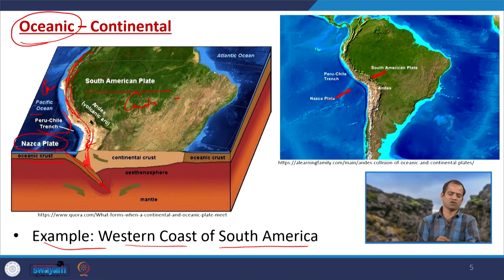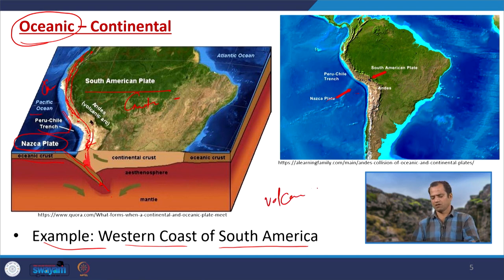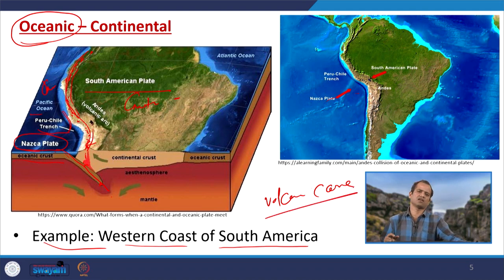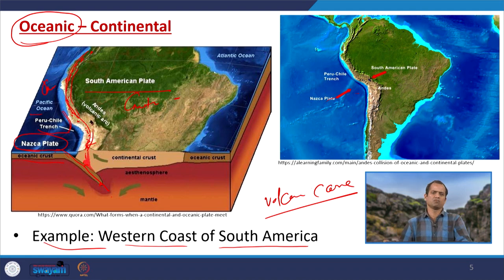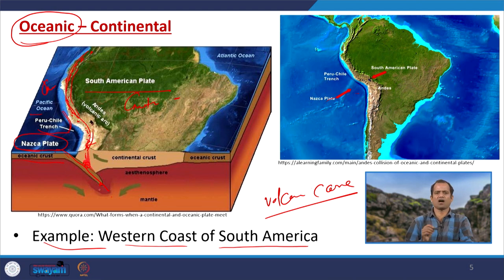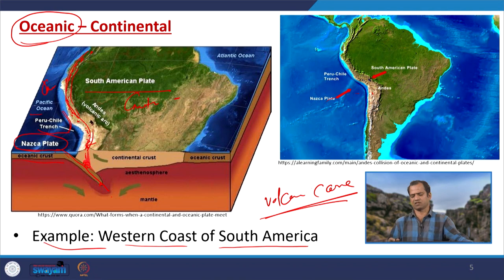In oceanic-continental convergence, the volcanoes form on the continent, so they are called a volcanic arc. In oceanic-oceanic convergence, the volcanoes are islands within the ocean, so they are called an island arc. Both are in arc form and both are formed due to melting of the mantle as the plate subducts down. This is the basic difference.